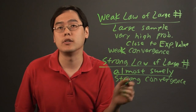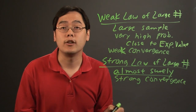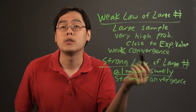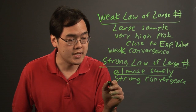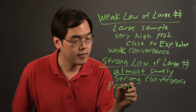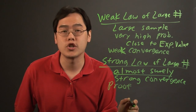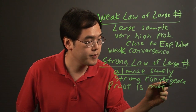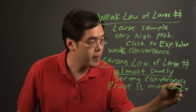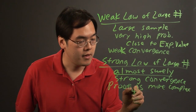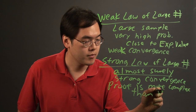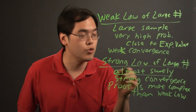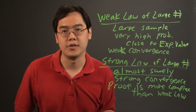Those are some of the subtle differences between the two. A more significant difference is that the proof of the strong law of large numbers is a lot more complex than the weak law — it takes a lot more to prove.